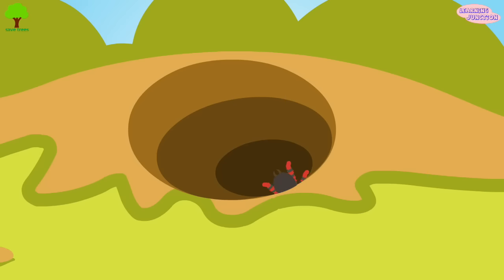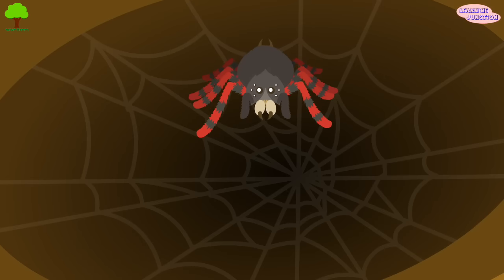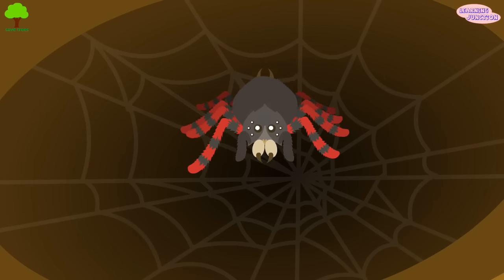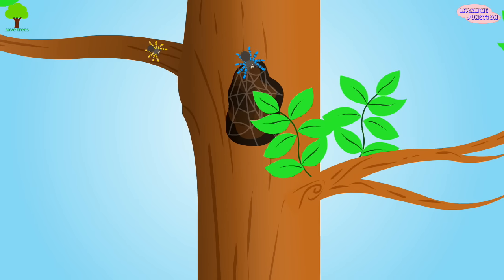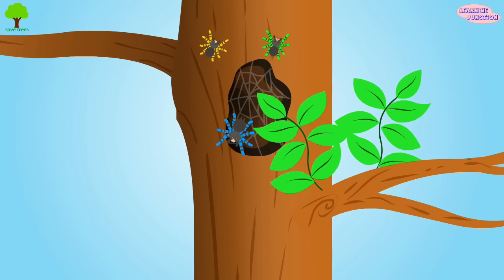If tarantulas live in the ground, they build a burrow to live in, which they line with their web or soft silk. If living in trees, they make a tunnel-shaped tube tent out of their silk to live in.